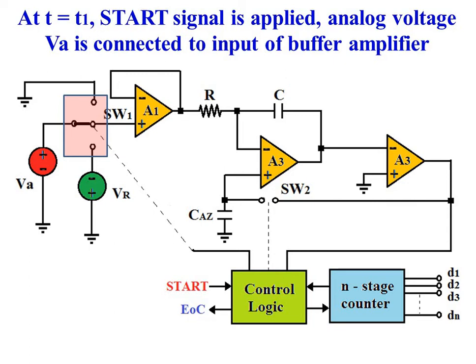So when the start signal is applied, analog voltage VA is connected to the input of the buffer amplifier as shown in the figure. From the diagram we can find that switch SW1 connects the analog input signal VA to the input of the buffer amplifier. So during this phase, the n-stage counter counts 2 raised to n clock signals. Once the count of the n-stage counter reaches all ones, the n-stage counter is reset.